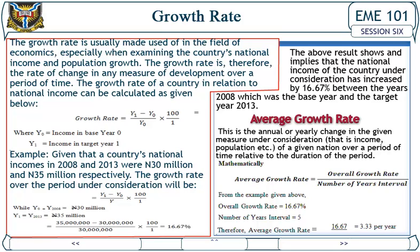Average Growth Rates: This is the annual or yearly change in the given measure under consideration — that is, income, population, and so on — of a given nation over a period of time, relative to the duration of the period. From the example above: overall growth rate equals 16.67 percent, number of years interval equals 5. Therefore, average growth rate equals 16.67 divided by 5, which equals 3.33 percent per year.